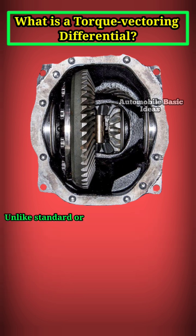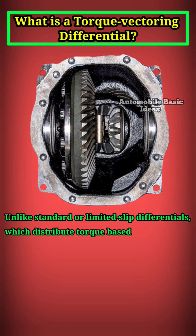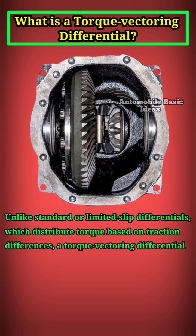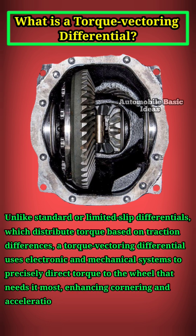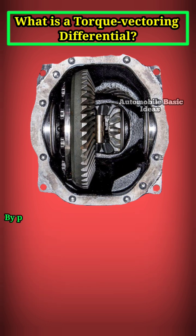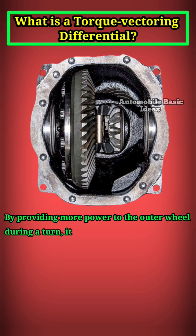Unlike standard or limited-slip differentials, which distribute torque based on traction differences, a torque vectoring differential uses electronic and mechanical systems to precisely direct torque to the wheel that needs it most, enhancing cornering and acceleration. By providing more power to the outer wheel during a turn, it counteracts understeer or oversteer.